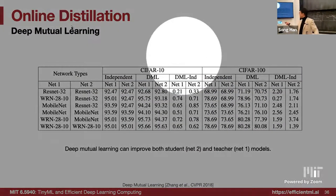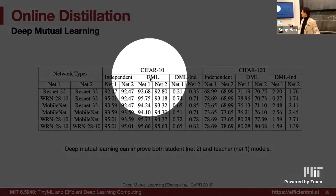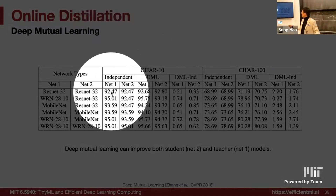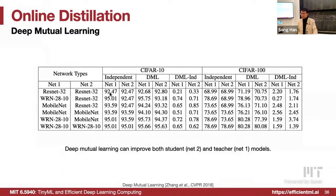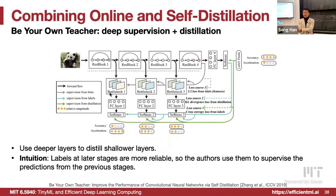This is called deep mutual learning. On CIFAR-10 and CIFAR-100 datasets, deep mutual learning can improve both the student and the teacher modules. The DML row shows the performance after this online distillation compared with independent training. We can also have a combined approach to combine online distillation and self-distillation.